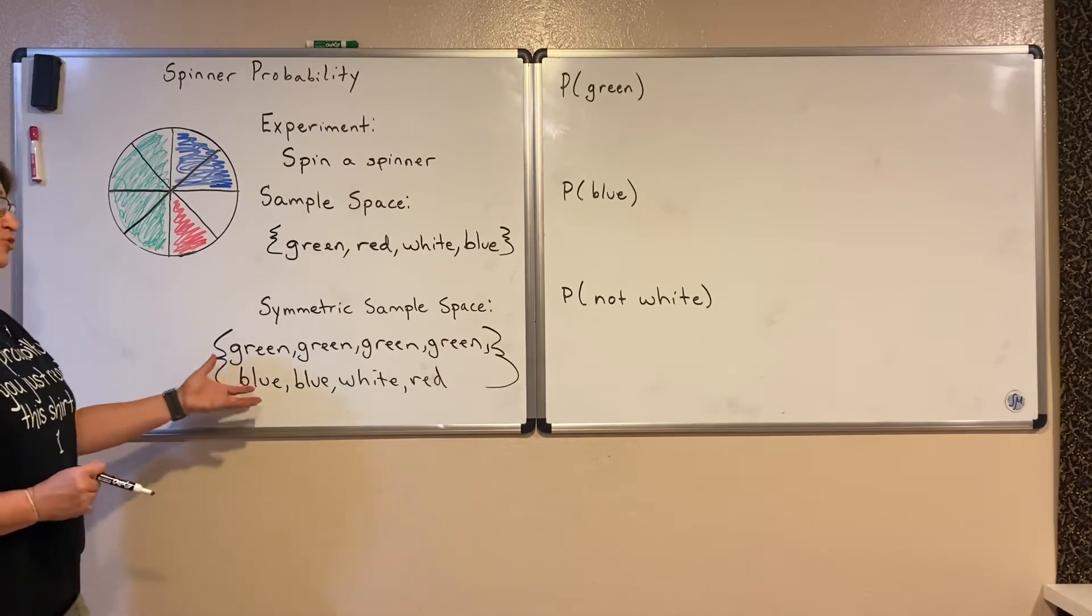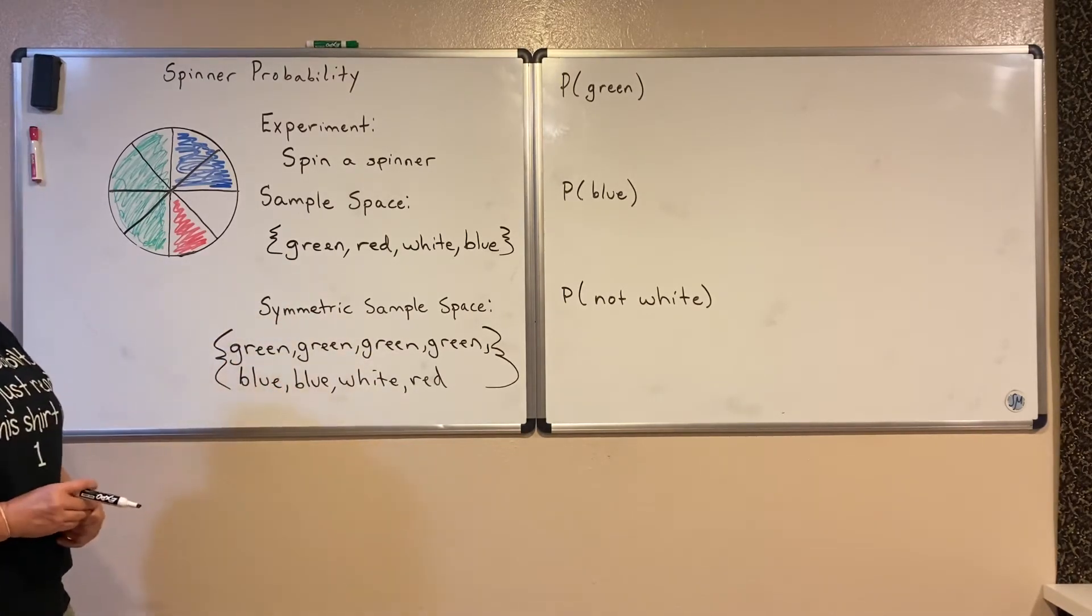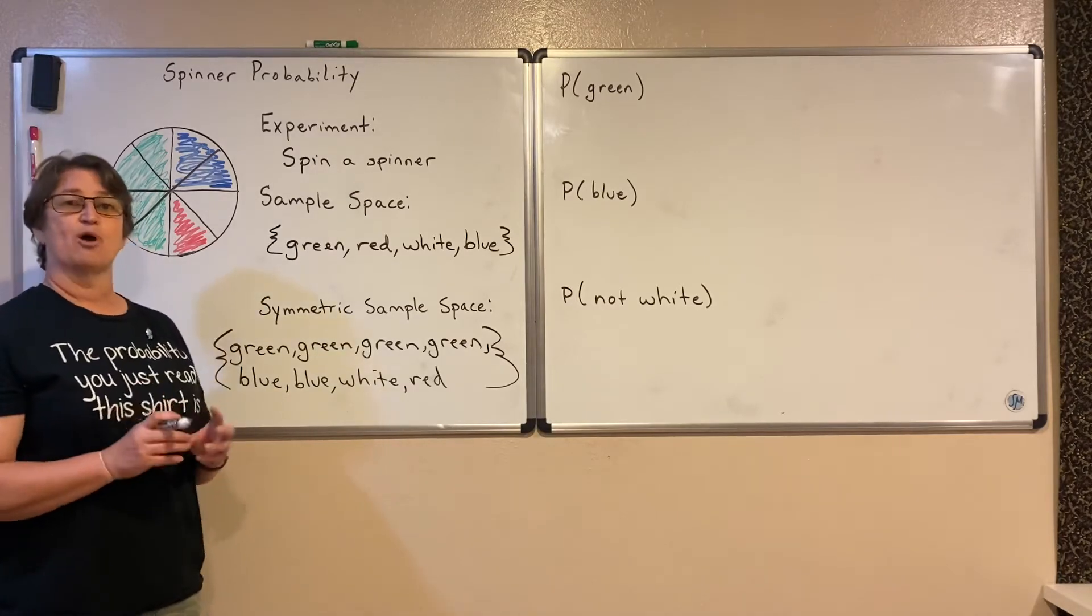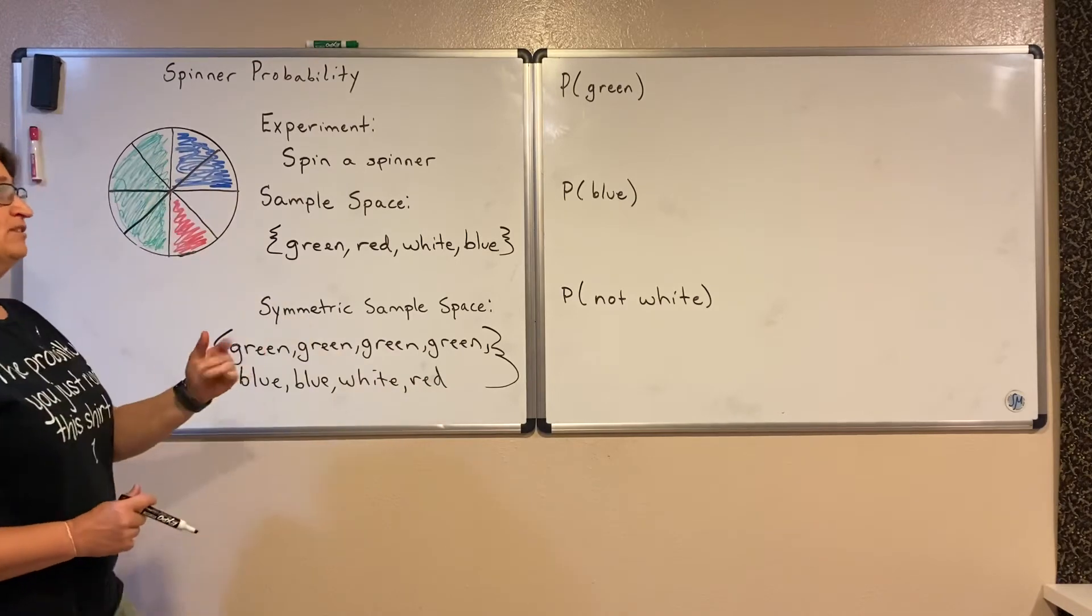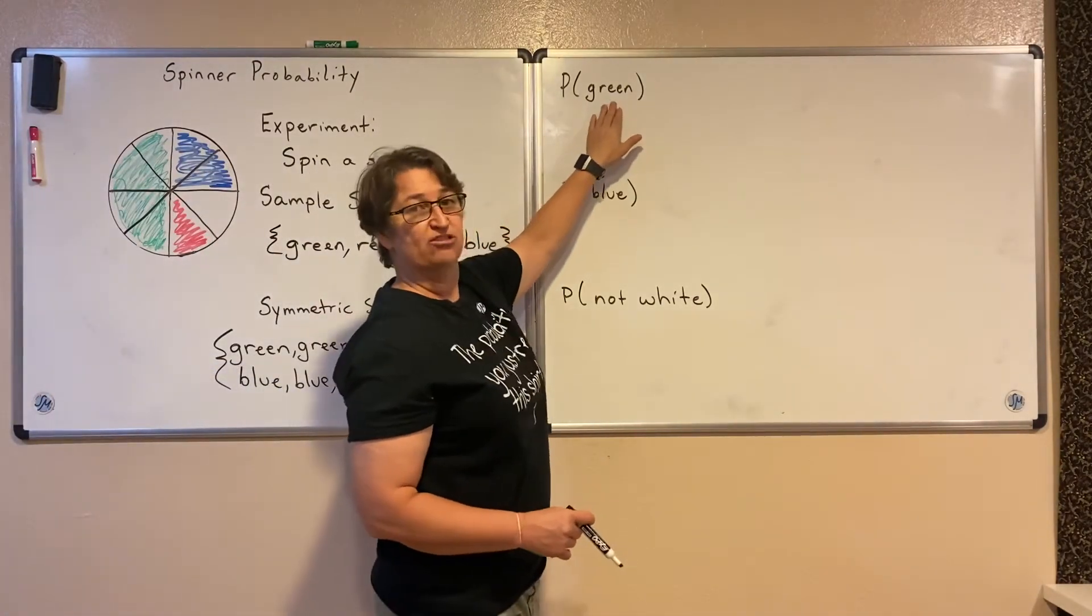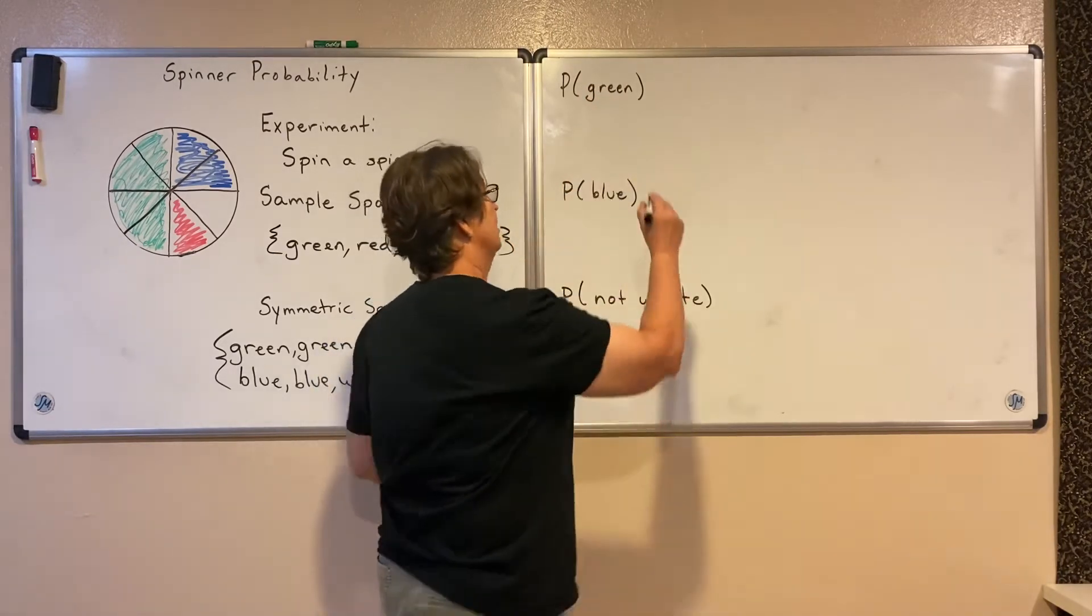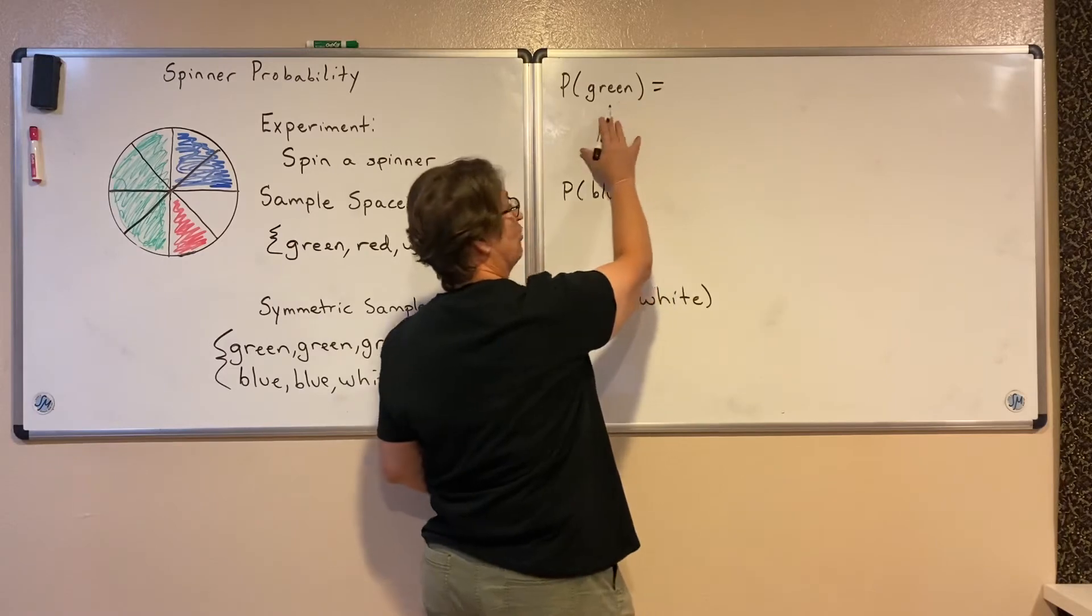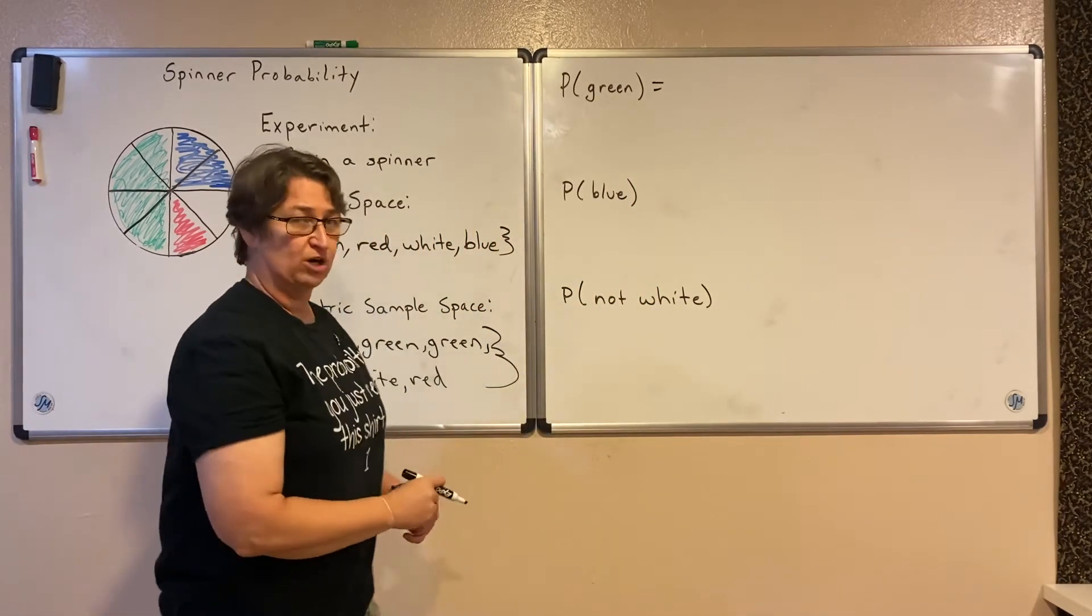Now, I'm going to find the probability using this symmetric sample space, and we can really see how probability and area are related. For instance, on this first one, I want to know the probability that we spin a green. Remember that probability is the number of ways we can get this event over the total number of outcomes.